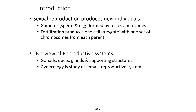In human reproduction we have gametes, which are composed of either sperm for males or eggs for females. These products are formed in the testes or ovaries, depending on your sex. Fertilization produces one cell known as a zygote, that contains one set of chromosomes from each parent. Each gamete provides one set of chromosomes and those combine to form the zygote.